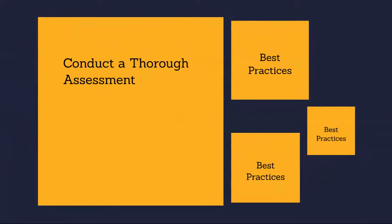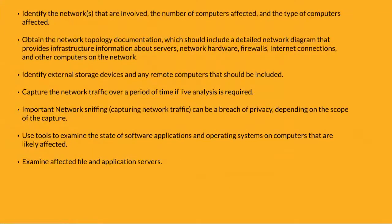Use the following best practices to identify, analyze, and document the infrastructure and computers affected by the situation. Much of this guidance could have already been followed as part of a risk assessment process to prepare a disaster recovery plan. Identify the networks involved, the number of computers affected, and the type of computers affected. Obtain the network topology documentation, which should include a detailed network diagram providing infrastructure information about servers, network hardware, firewalls, internet connections, and other computers on the network.